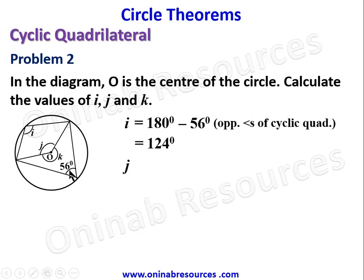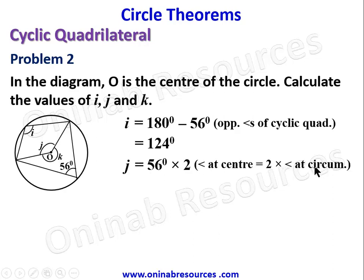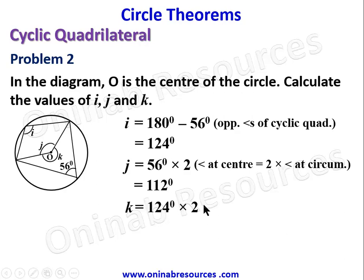For J: this uses the theorem that the angle at the center is twice the angle at the circumference — a theorem explained in a previous video. So J equals 56 times 2, giving 112 degrees. For K: K is connected to I using the same theorem, so K equals 124 times 2, giving 248 degrees.